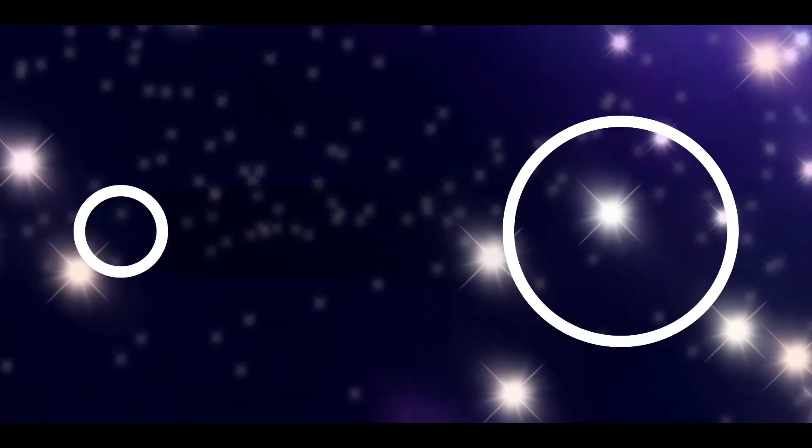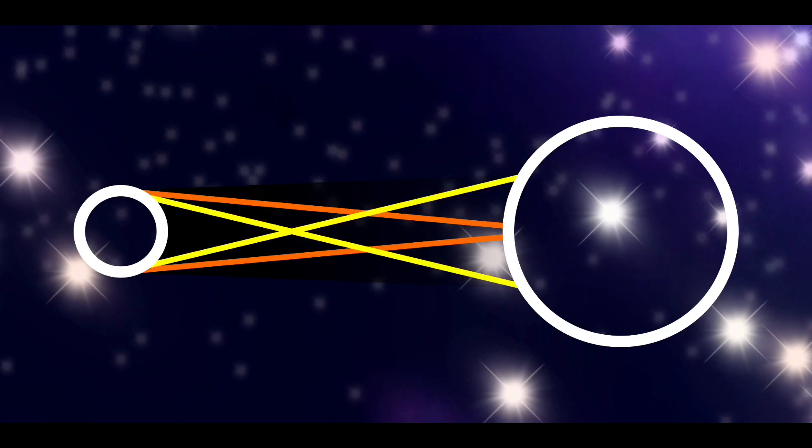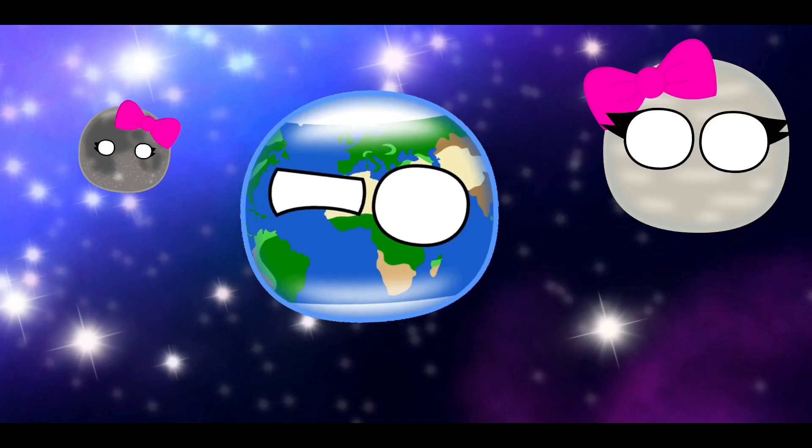So, a solar eclipse is when the Moon casts a shadow over the Earth's surface, and shadows are divided into two things, Umbra and Penumbra. Umbra and what now? What's that?